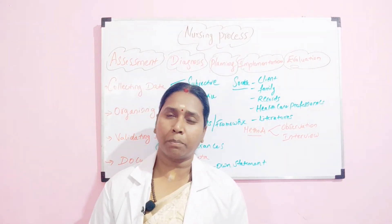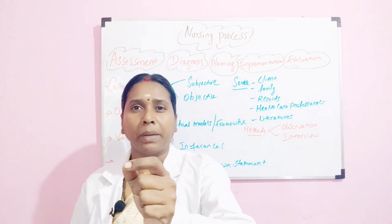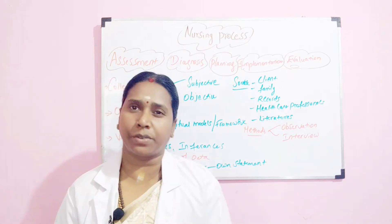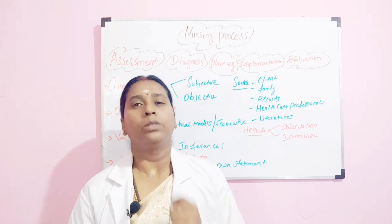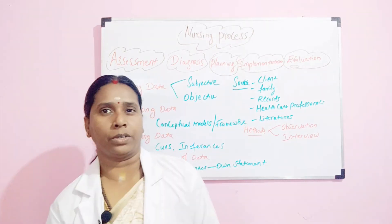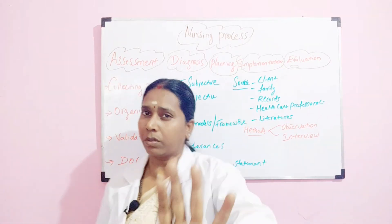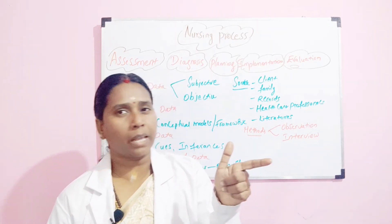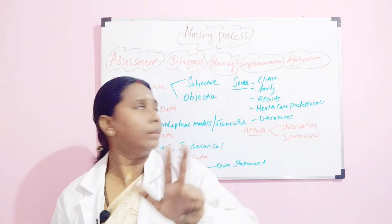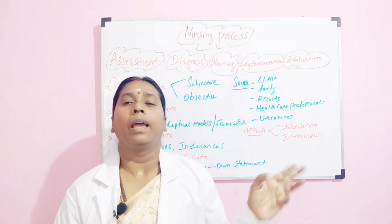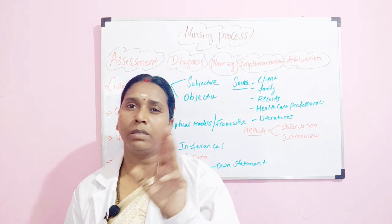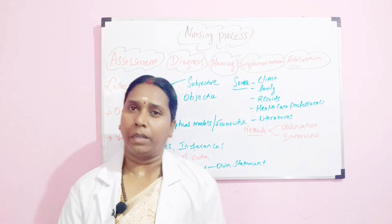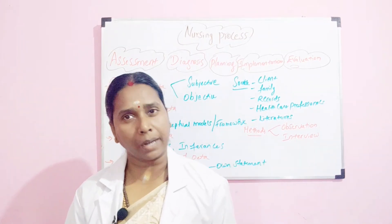The final data source is literature. If a patient reports sharp pain, you document it as sharp pain, but understanding when sharp pain occurs comes from your books and knowledge — your literature. So in summary, the five sources of data are: the client (primary), family/friends, records/documents, healthcare professionals, and literature.